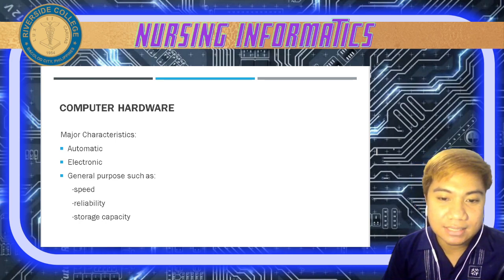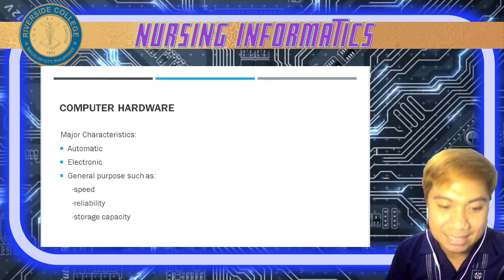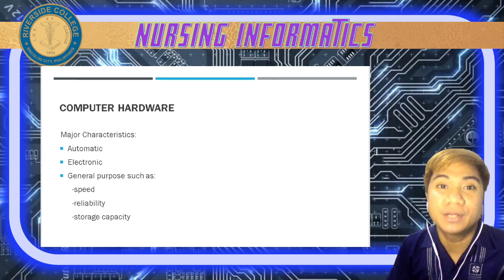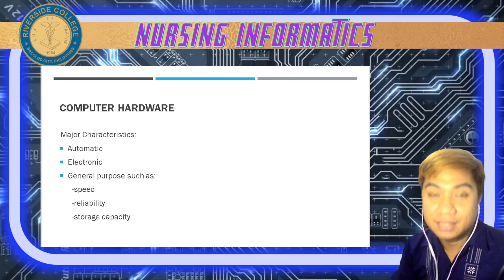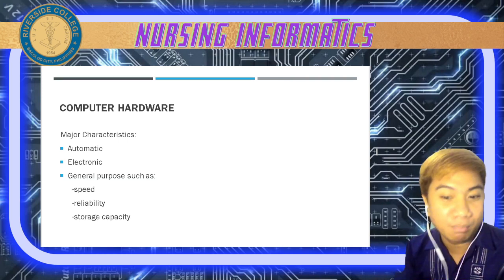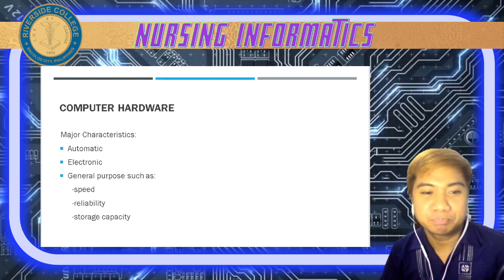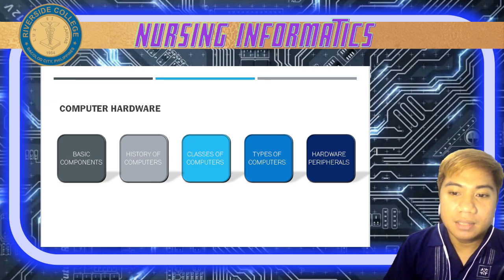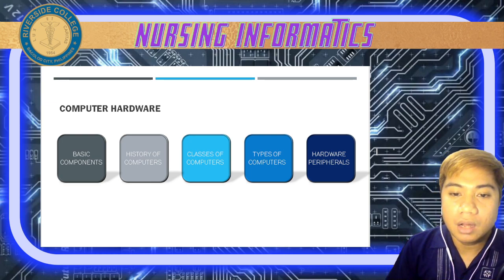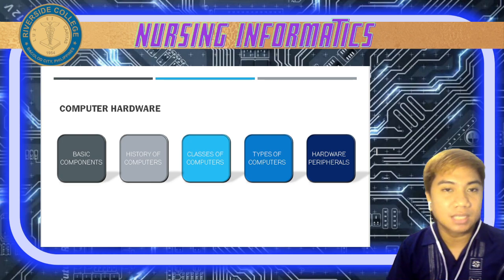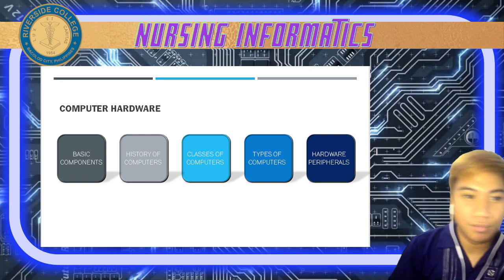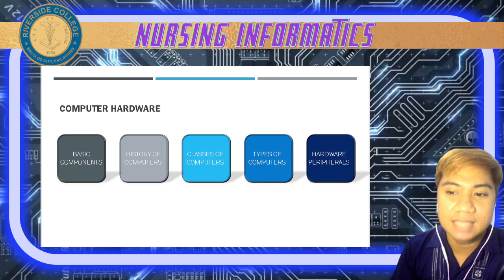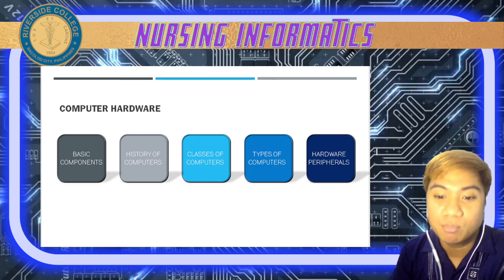Next is storage capacity — a good computer hardware must have a bigger storage capacity than our notebooks and literal books that we are using. In this topic we will be discussing the basic components, the history of computers, the classes, the types of computers, and your hardware peripherals, which we will discuss one by one.